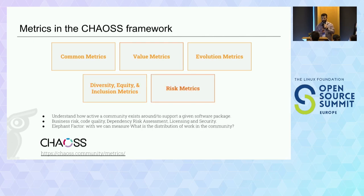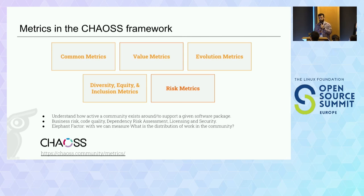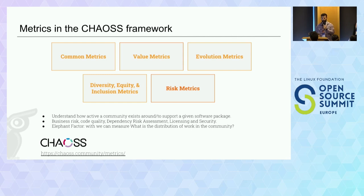The last group is Risk Metrics, where the goal is to understand how active a community is around or supporting a given software package. Focus areas include business risk, code quality, dependency risk assessments, licensing, and security. One sample metric here is the Elephant Factor, with which we can measure the distribution of work in the community.